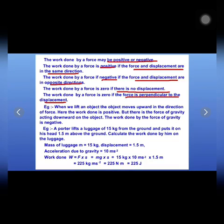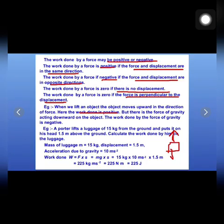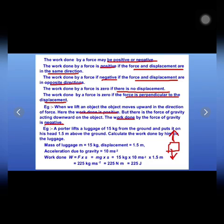Let us understand these with an example. When we lift an object, if we apply force in the upward direction, the object also moves in the upward direction — the direction of force and displacement are the same, so the work done is positive. However, gravity acts downward on the object. Since the force of gravity is in the downward direction but the object moves upward, the force and displacement are in opposite directions, so the work done by gravity is negative.